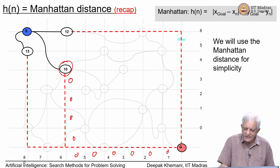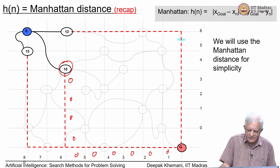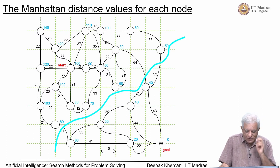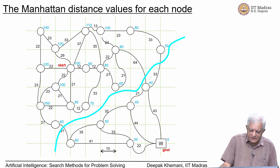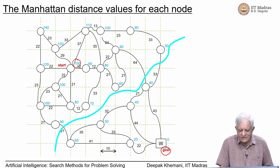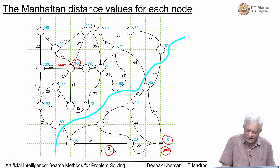We will use Manhattan distance simply because it is easier to compute, and we encourage you to use Manhattan distance in an exam to avoid computing the Euclidean distance which involves square roots. These are the Manhattan distance values written in blue along the edges. The start node was 10 hops away from the goal, so its distance is 100 because each grid has a value of 10. All the numbers in blue are the Manhattan distances to the goal. Obviously the goal has value 0, and the further away you are, the larger the Manhattan distance.